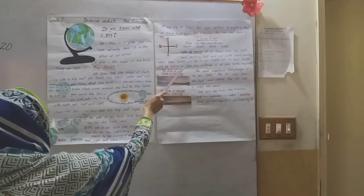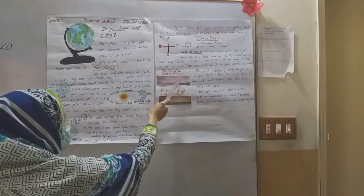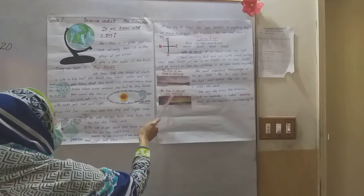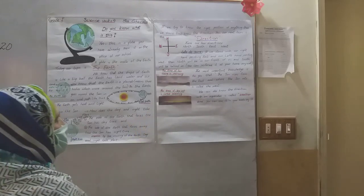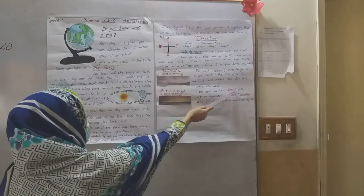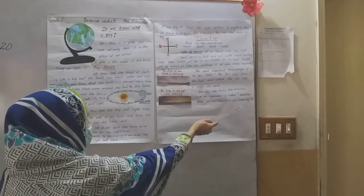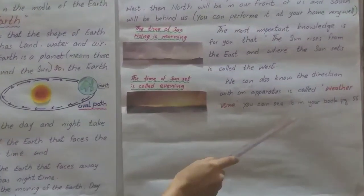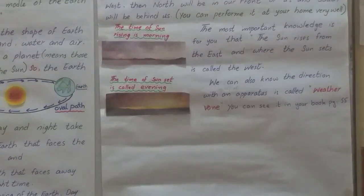The time of sun rising is called morning. The time of sunset is called evening. Just like these pictures. We can also know the direction with the help of any operator called weatherman. You can see it in your book page number 55. Thank you.